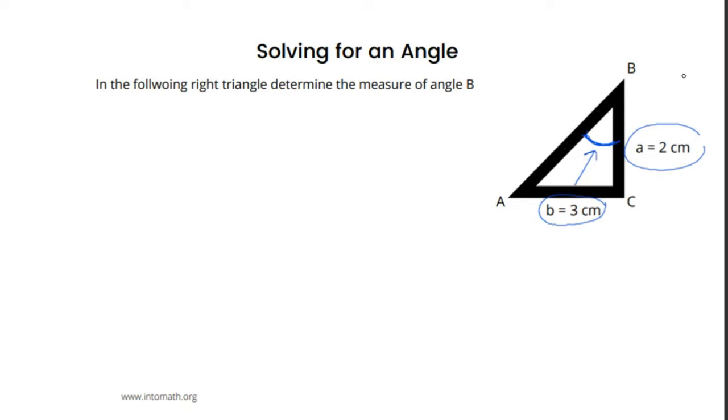The hypotenuse is not given and it's not involved. Since the hypotenuse is not involved, I know that the ratio is not sine or cosine because both of those ratios have the hypotenuse in them. So, I'm going to use tangent. So, tangent of angle B is equal to opposite over adjacent. In this case, tangent B is equal to 3 over 2.